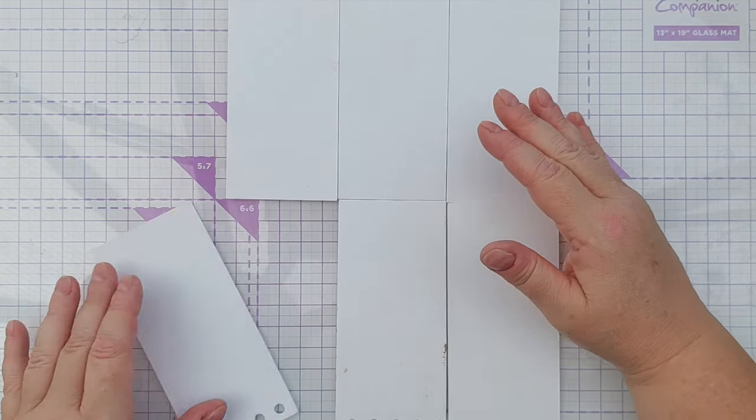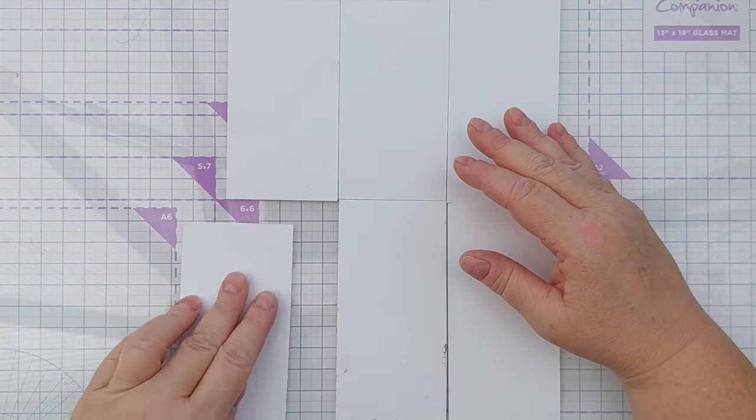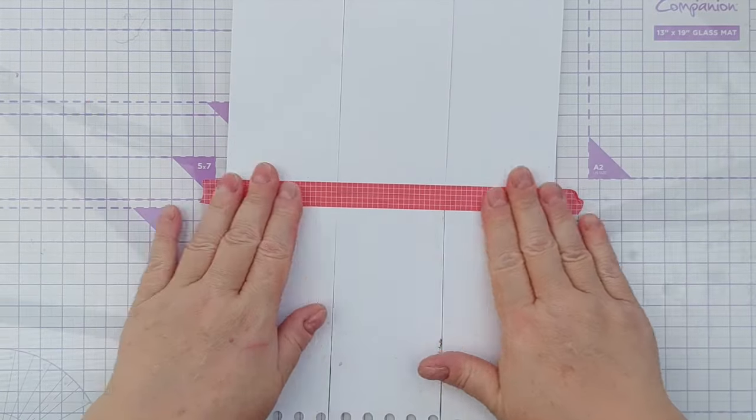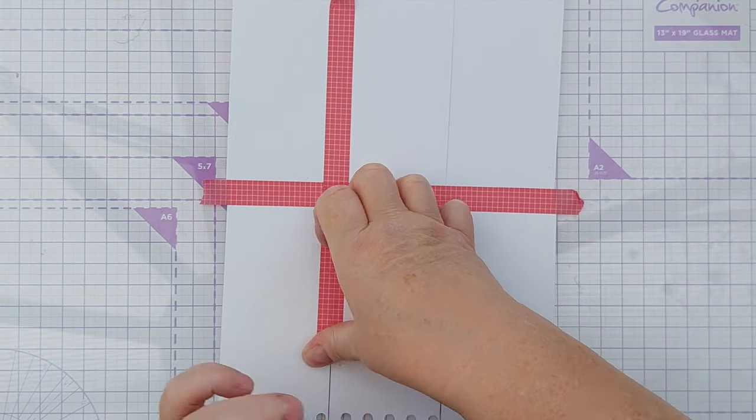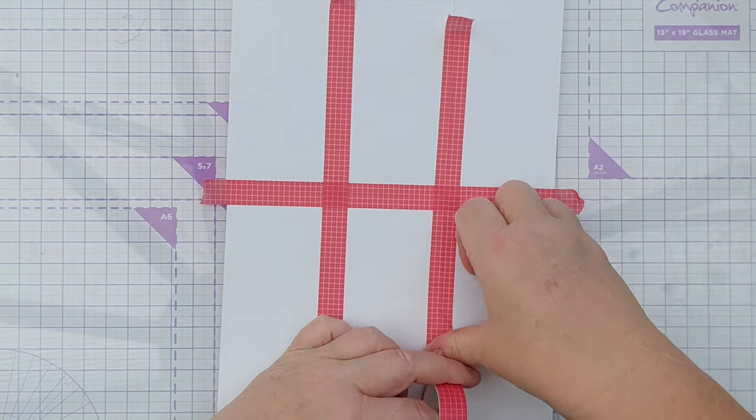As I've done in previous white scrap videos, I use some washi tape to stick them all together so that I can work on them as if they were one big piece of paper.